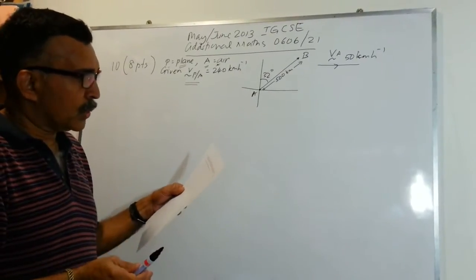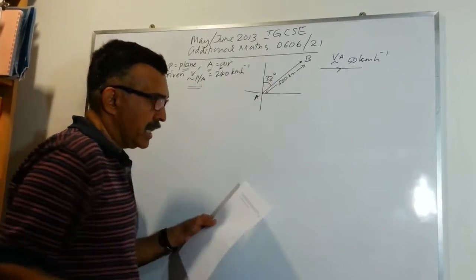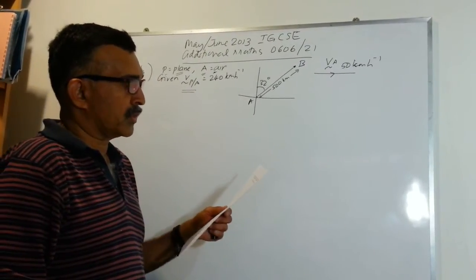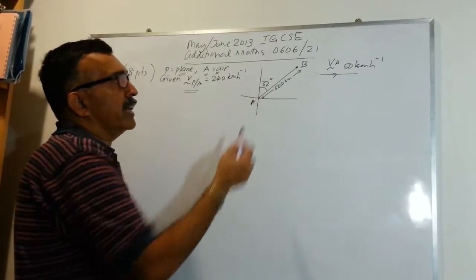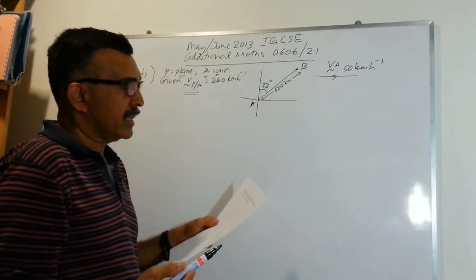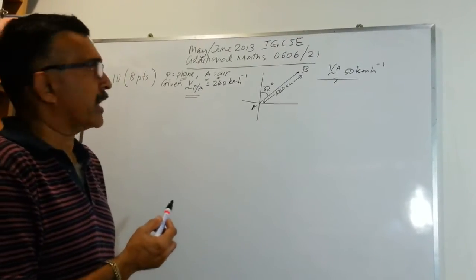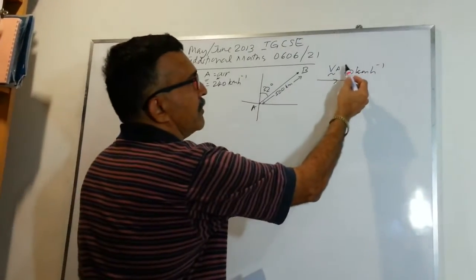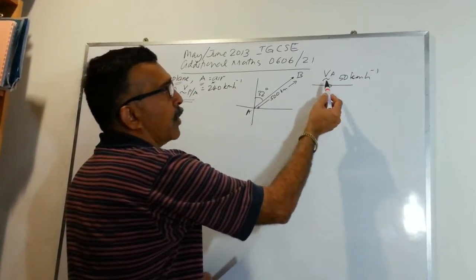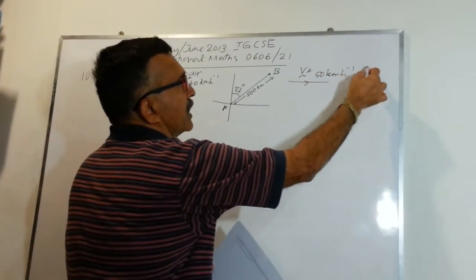The plane is flying directly from A to B, where B is 500 km from A on a bearing of 032 degrees — I've indicated that on a picture here with the distance and the bearing. There is a constant wind of 50 km per hour blowing from the west, and I'm using V_A to denote the velocity vector of the wind.